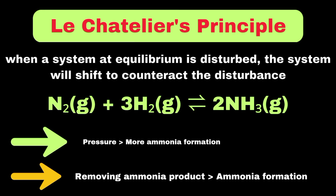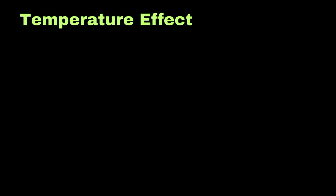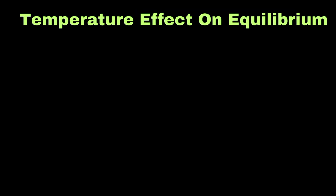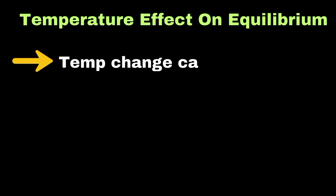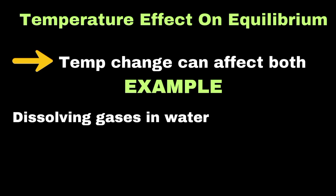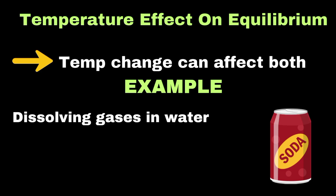Now let's explain temperature effects on equilibrium. Temperature changes can shift the position of equilibrium by favoring either the forward or reverse reaction. When you heat a carbonated drink, more carbon dioxide escapes because higher temperatures favor the endothermic direction of the reaction. This is why cold sodas stay fizzy longer than warm ones.